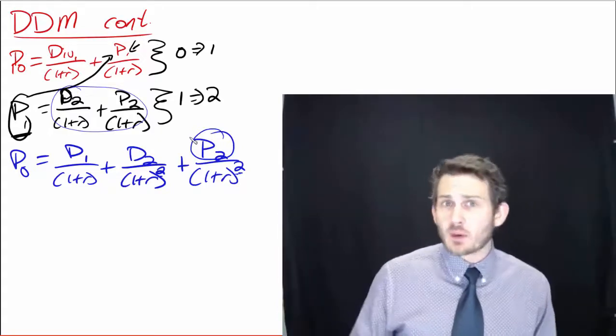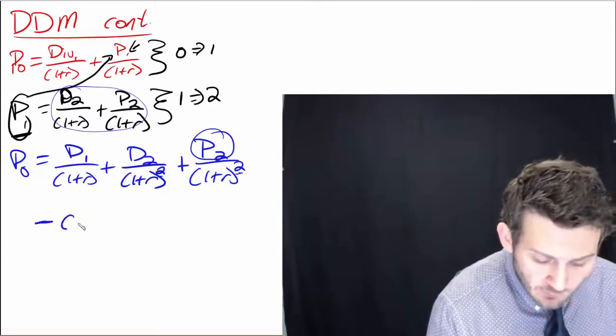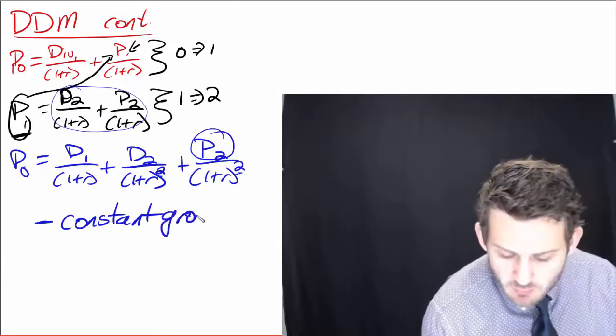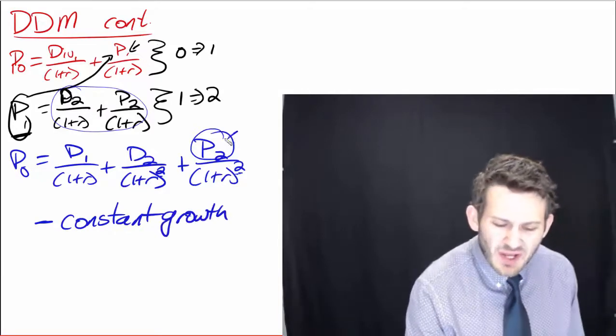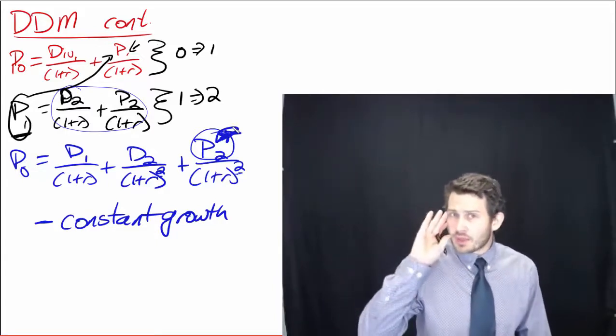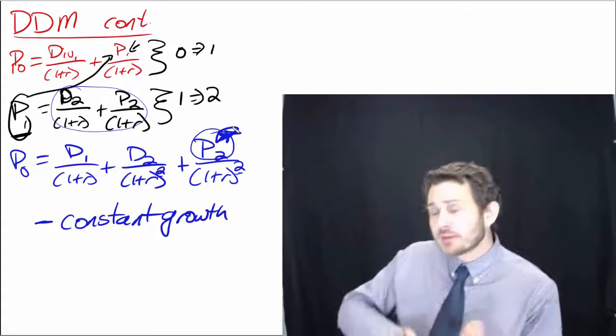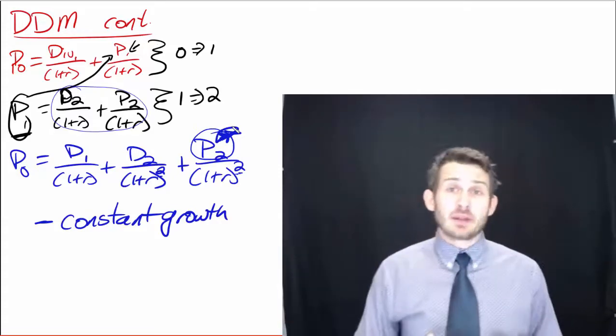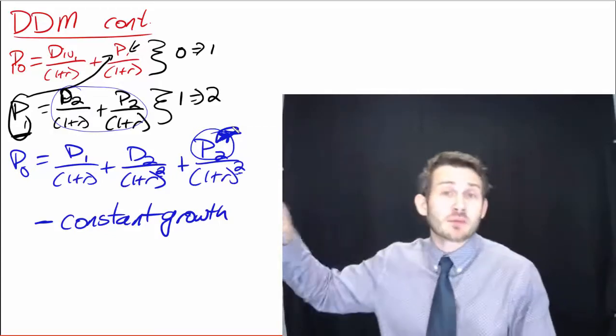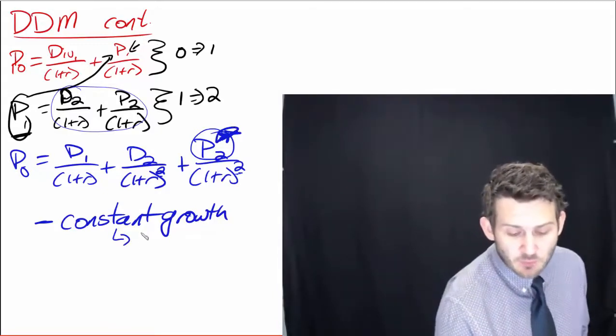This is the basic equation, the dividend discount model, and what we're going into next is we're going to be going into a constant growth. Because what we don't know is where does that P2 come from? Where does that come from? So what we're going to think about is, all right, we can take our current dividends, and then we can estimate a growth rate. How fast do we think this company is going to be growing? And then we can just extend out those dividends forever and bring them back to a current time period.